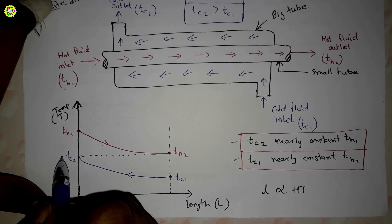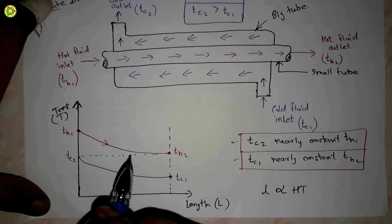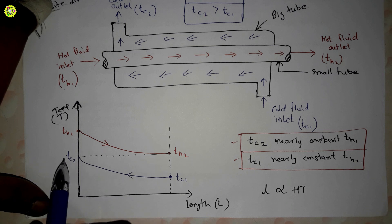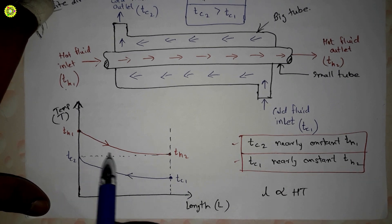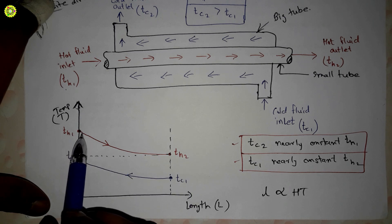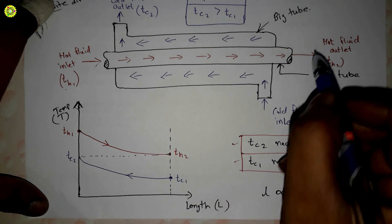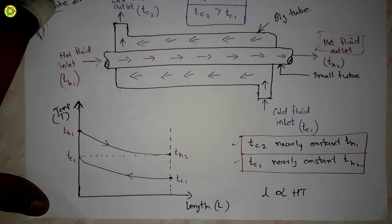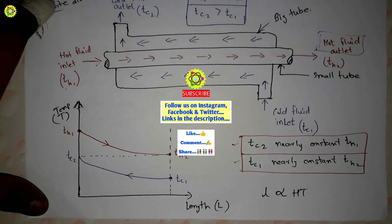So the graph shows the hot fluid temperature decreasing and the cold fluid temperature increasing. We get the cold fluid outlet near the hot fluid inlet side. Due to this counter flow arrangement, we get the maximum rate of heat transfer for a given surface area, which is why these heat exchangers are most favored for heating and cooling of fluids.